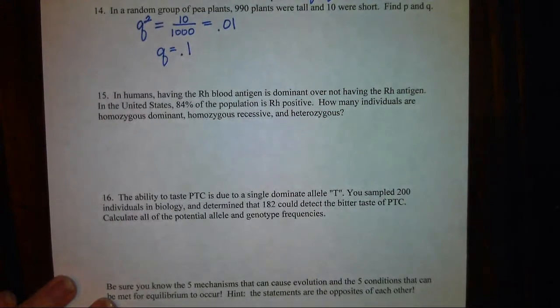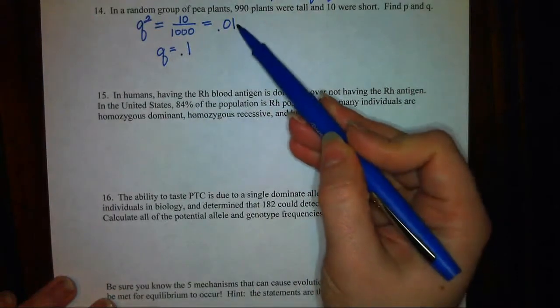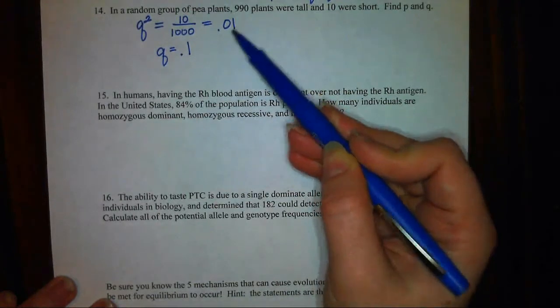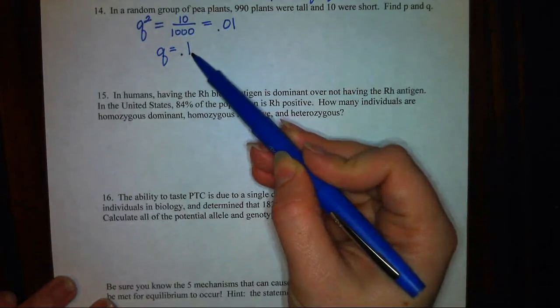0.1 times 0.1 equals 0.01. So the first information given in the problem is the percentage of the population that's homozygous recessive. From that, I could determine the percentage of the alleles that are recessive.